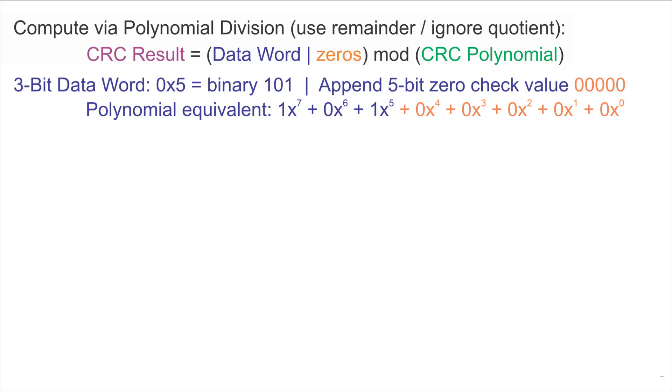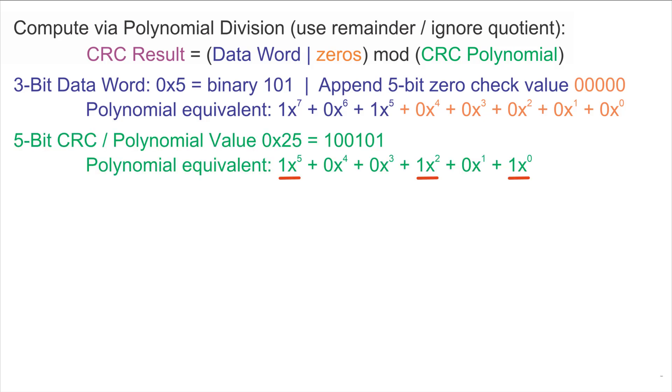For this example, we use a data word of binary 101 and we'll append a 5-bit zero check value. That gives us the polynomial equivalent of x to the seventh plus x to the fifth. We use a 5-bit CRC polynomial of x to the fifth plus x squared plus one.